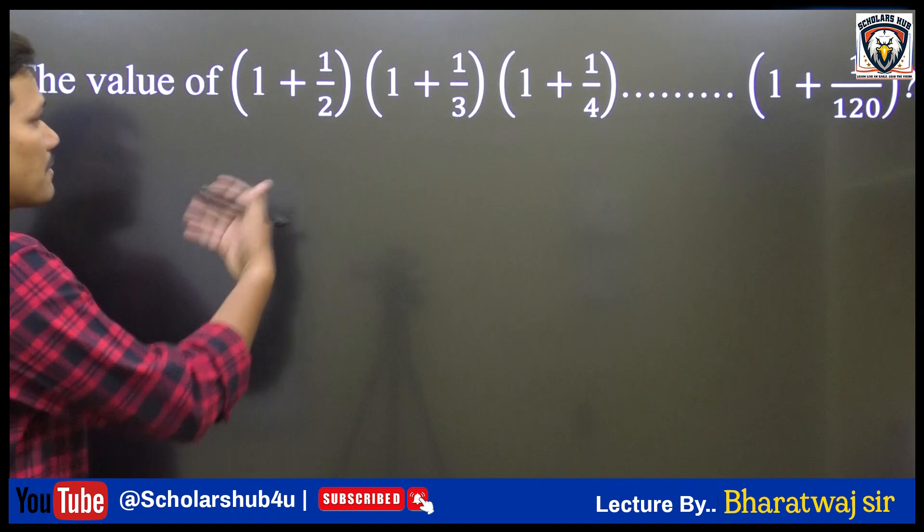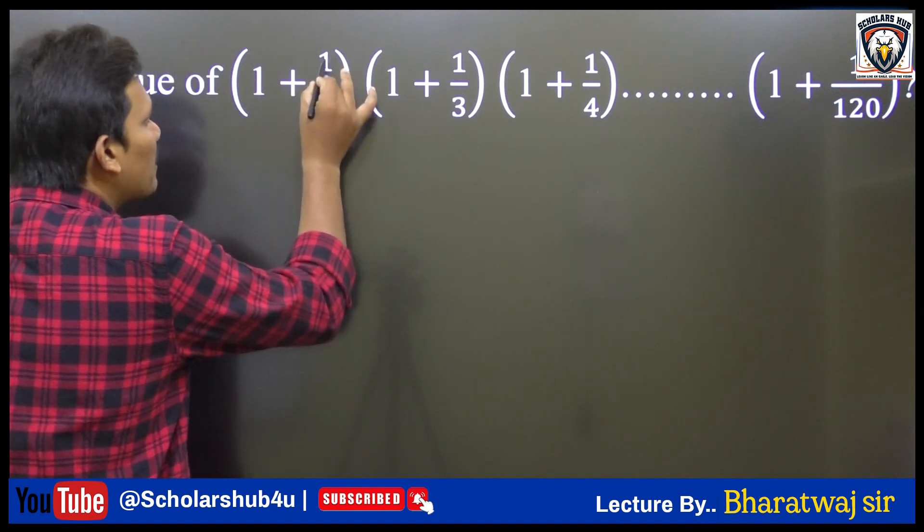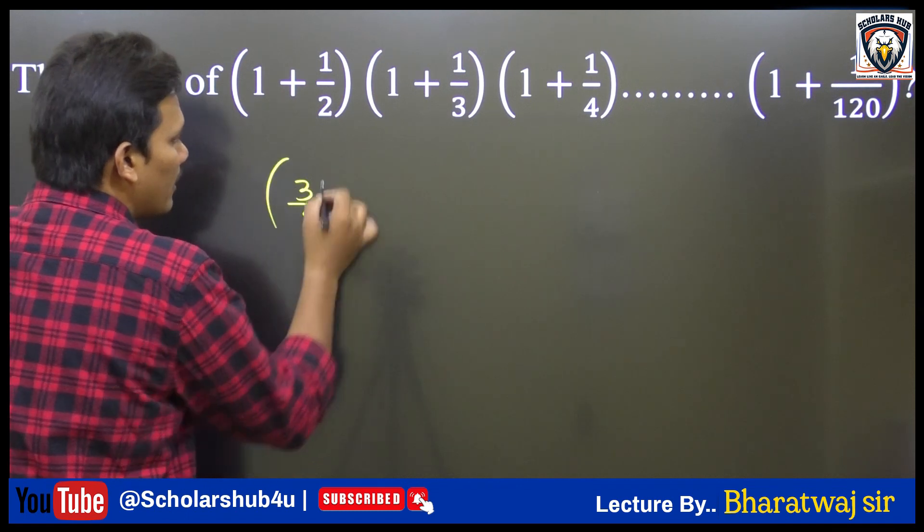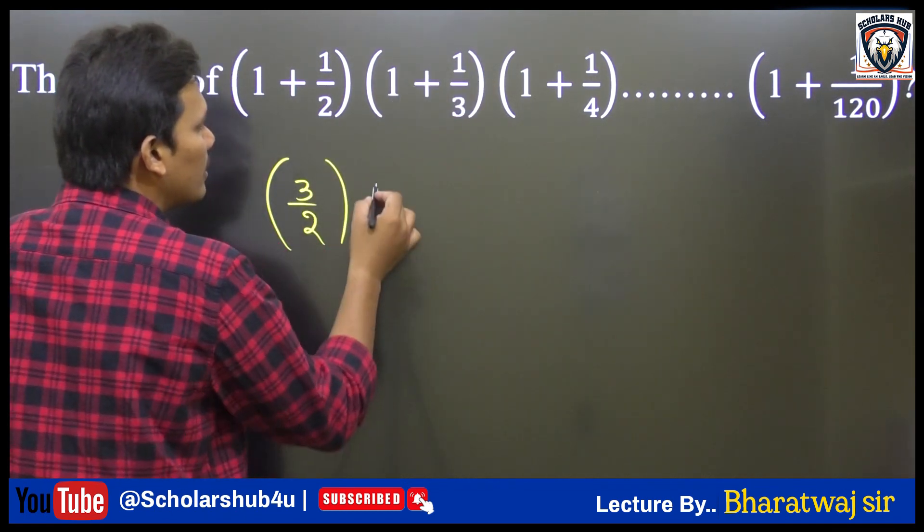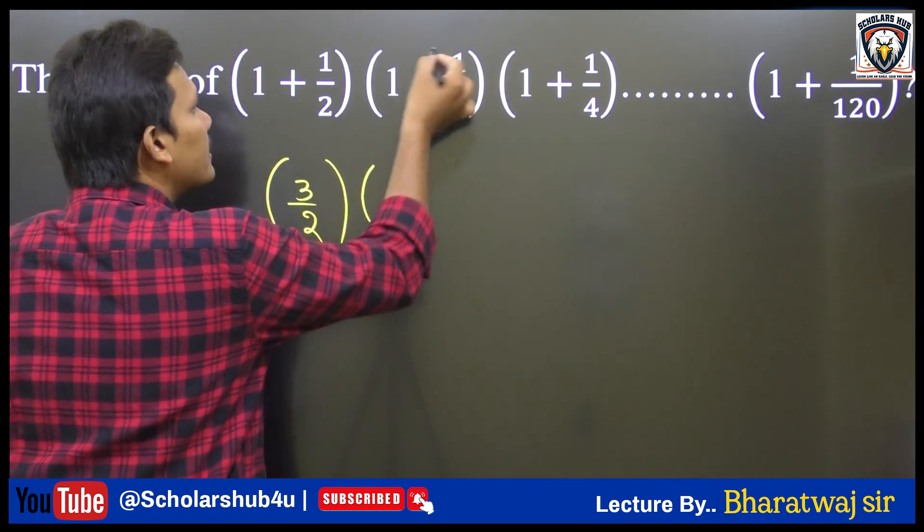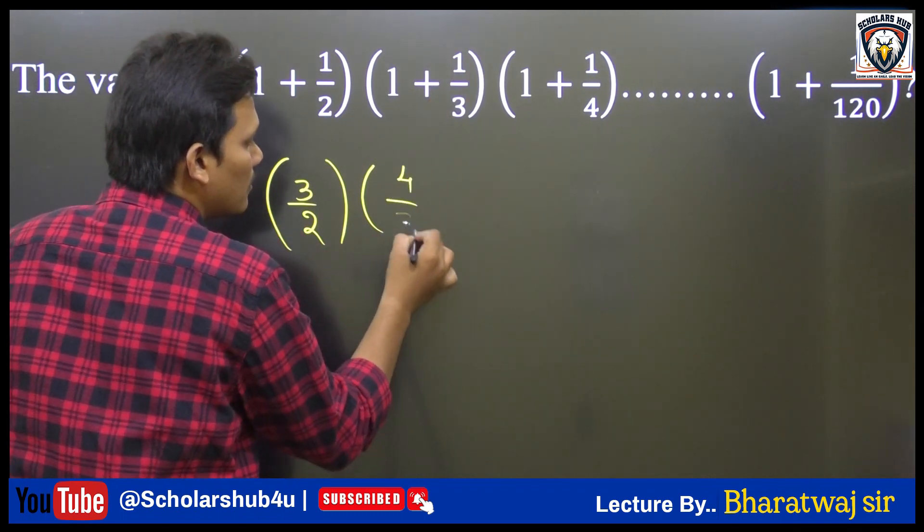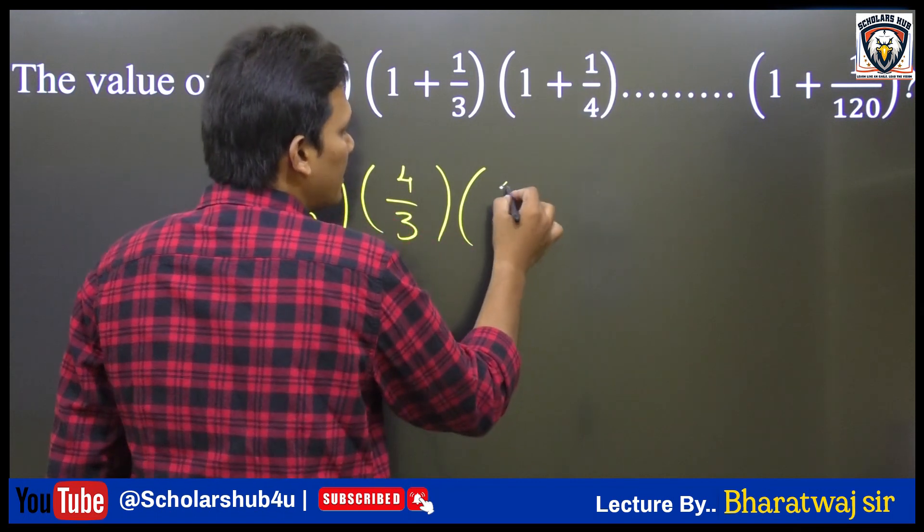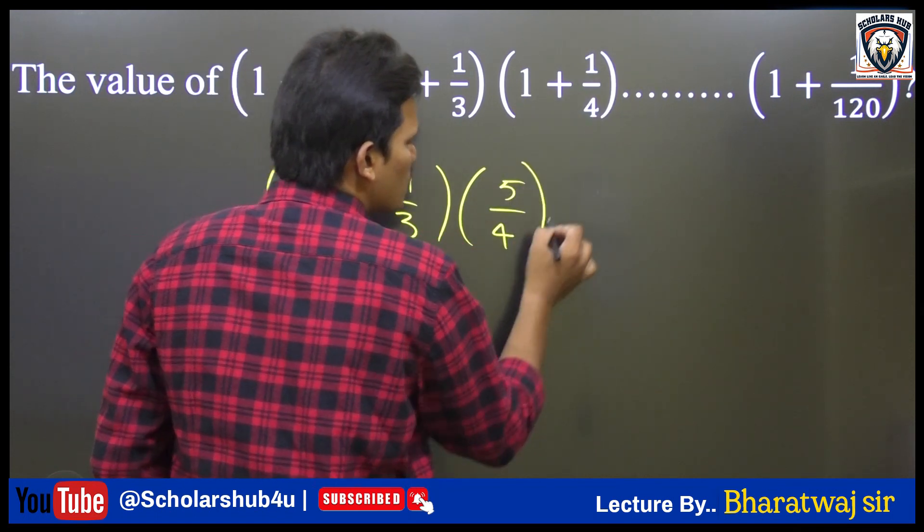So we are going to write the next step of this question. 1 plus 1 by 2 value equal to 3 by 2. Next 1 plus 1 by 3 value is equal to 4 by 3. Next 1 plus 1 by 4 value is 5 by 4.